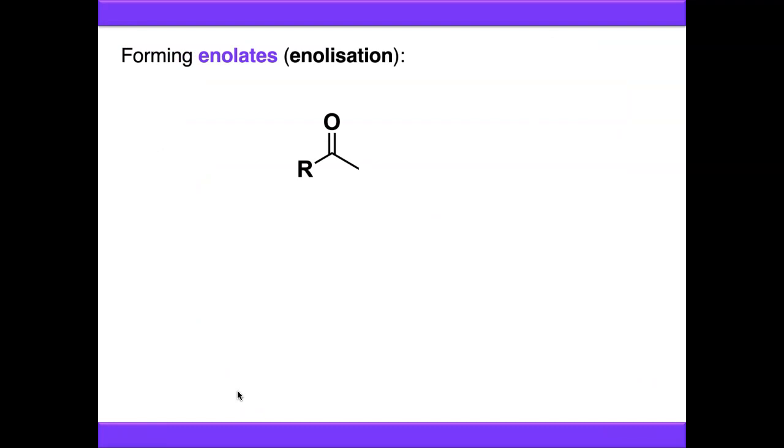So how do we form enols and enolates? Starting with enolates, this process is called enolization, we treat our carbonyl compound with a base. Depending on the nature of the carbonyl compound you're using and the strength of the base you're using, this could either be a reversible reaction or an irreversible reaction. I've done a video on pKa and pKaH in organic chemistry, which should allow you to predict what's going to happen there. The other thing that we need is a proton on the alpha position. So the position that's immediately adjacent to the carbonyl needs to have protons on it. If there are no protons, we can't enolize at that position.